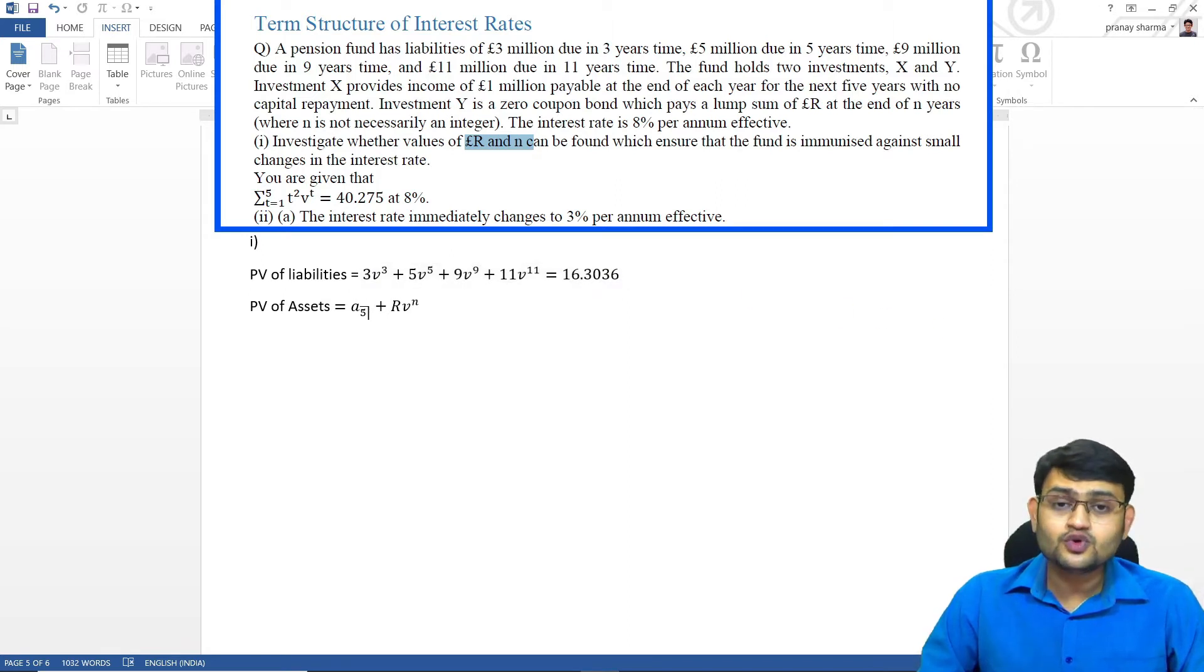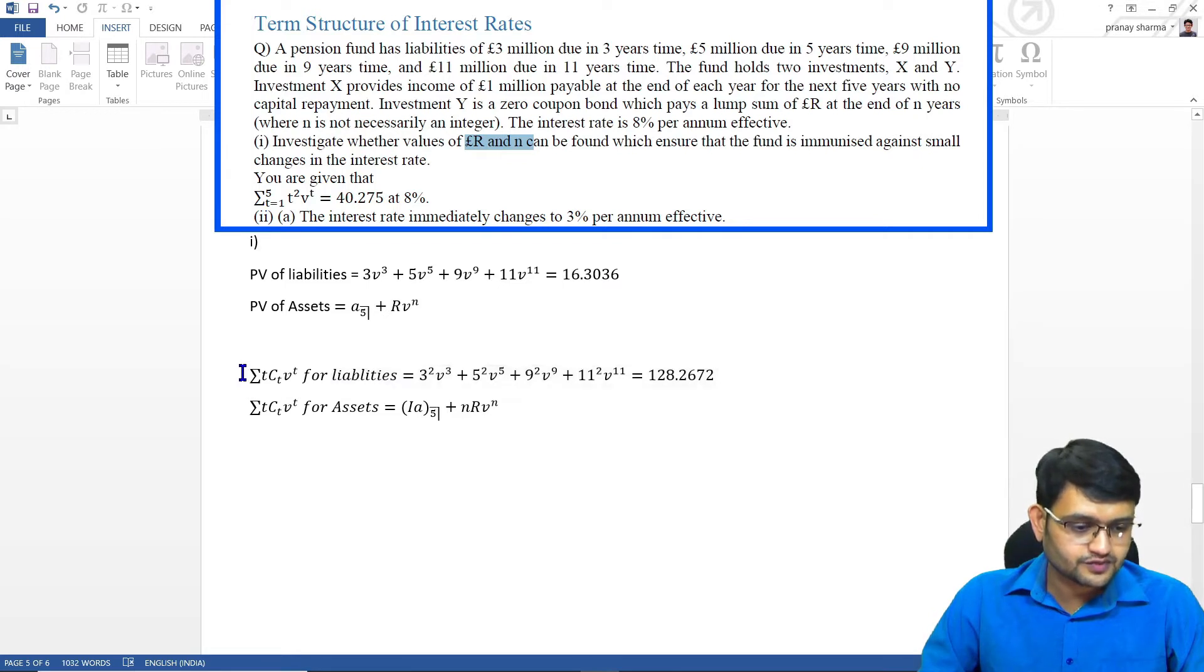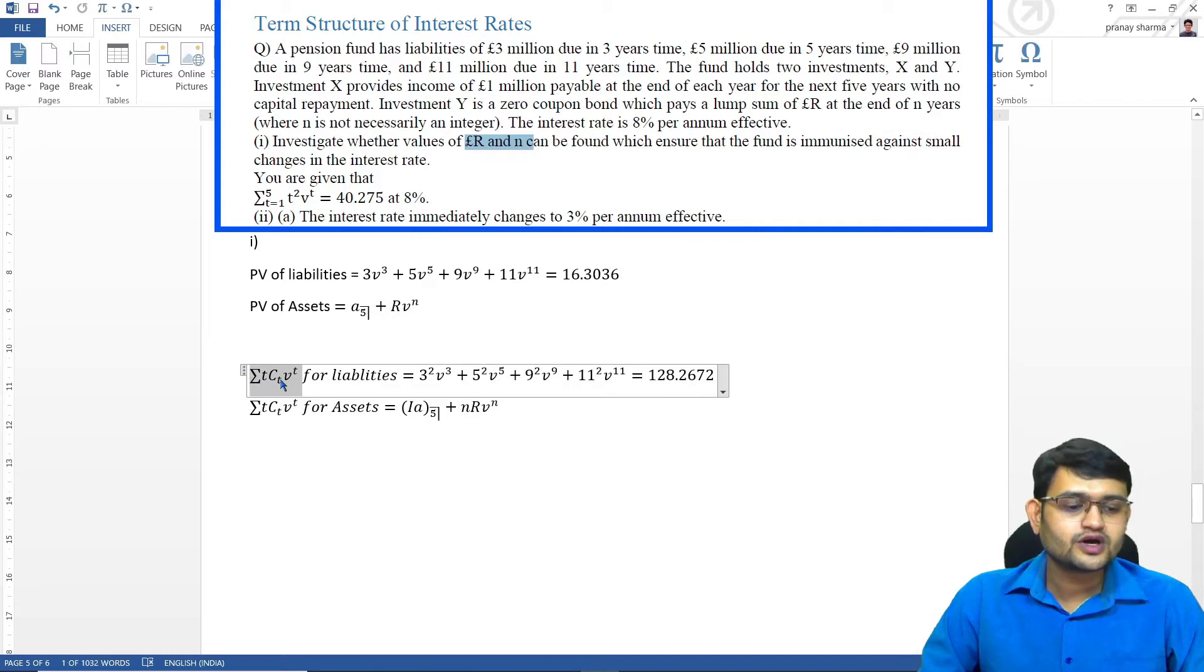Then we'll go for the numerator of our DMT and this is how I have written it. Summation T C T V raise to T for liabilities. You can just write numerator of DMT for liabilities, denominator for DMT, DMT for assets. If you are not writing in equation editor, I would suggest you write numerator of DMT, that becomes easier.